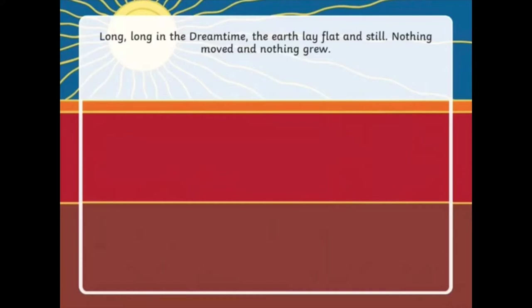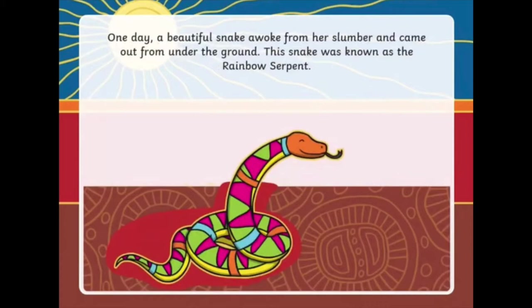Long, long in the dreamtime, the earth laid flat and still. Nothing moved, nothing grew. One day, a beautiful snake awoke from her slumber and came out from under the ground. This snake was known as the rainbow serpent.